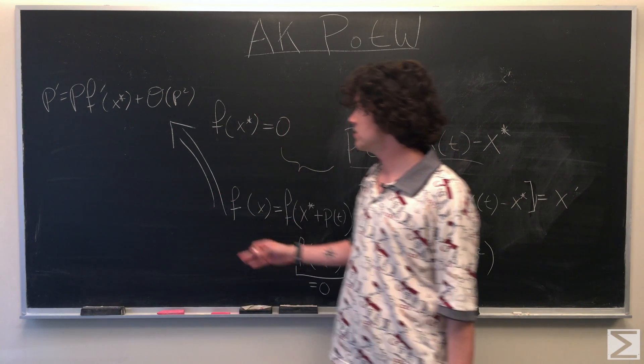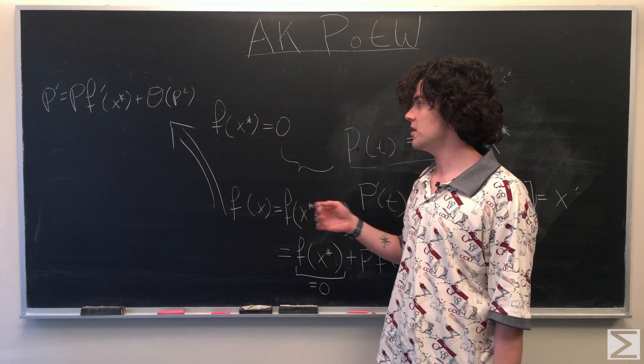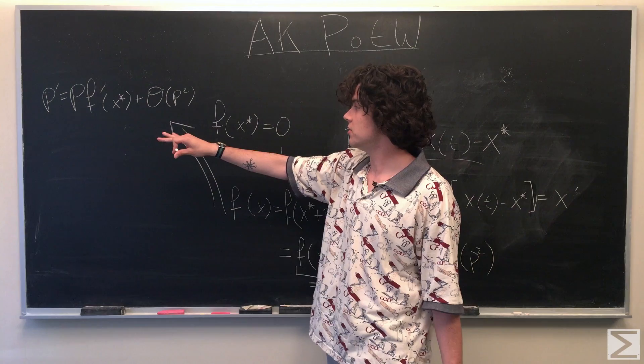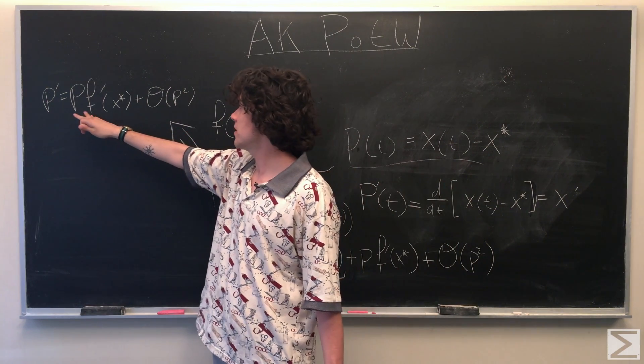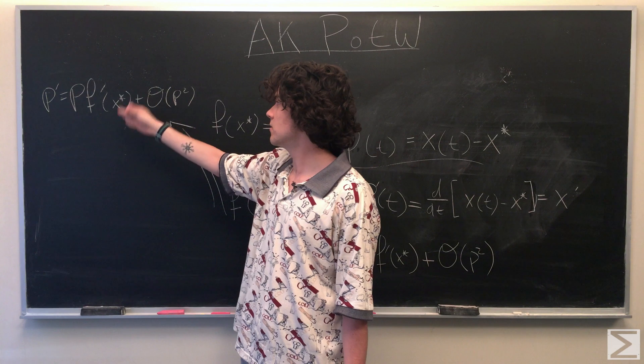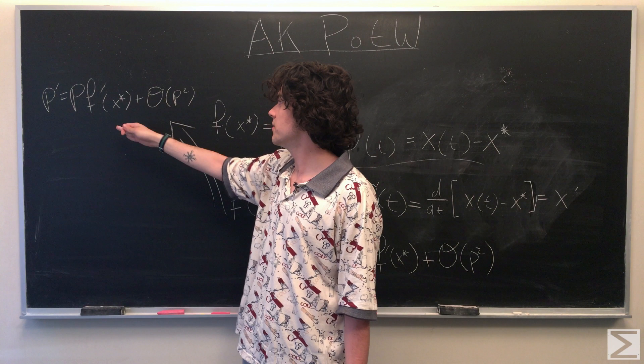So what we have now is the rate of change of our perturbation is equal to this function here. So we have our perturbation times the derivative of our f of x, the derivative at our critical point.